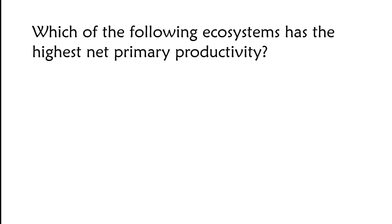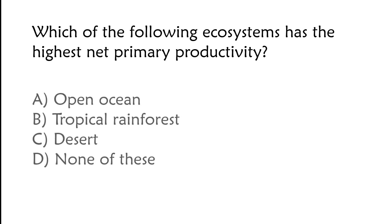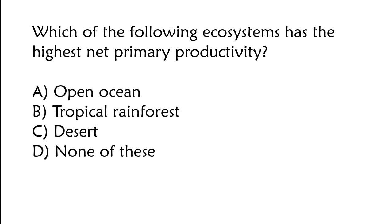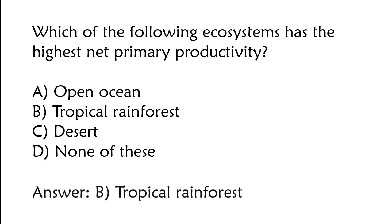Which of the following ecosystems has the highest net primary productivity? A) Open ocean, B) tropical rainforest, C) desert, D) none of these. The correct answer is option B, tropical rainforest.